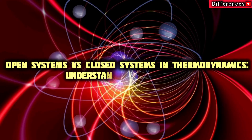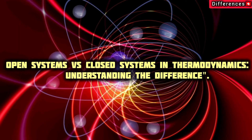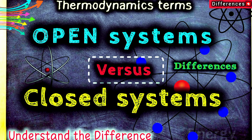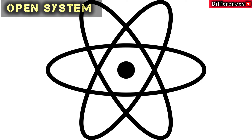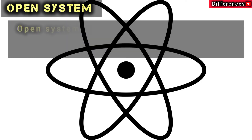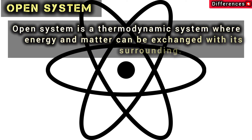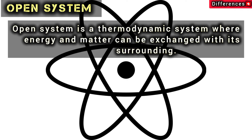Open systems versus closed systems in thermodynamics: understanding the difference. Welcome to Differences. Today we are exploring two fundamental concepts in thermodynamics — open systems and closed systems. An open system is a thermodynamic system where energy and matter can be exchanged with its surroundings.